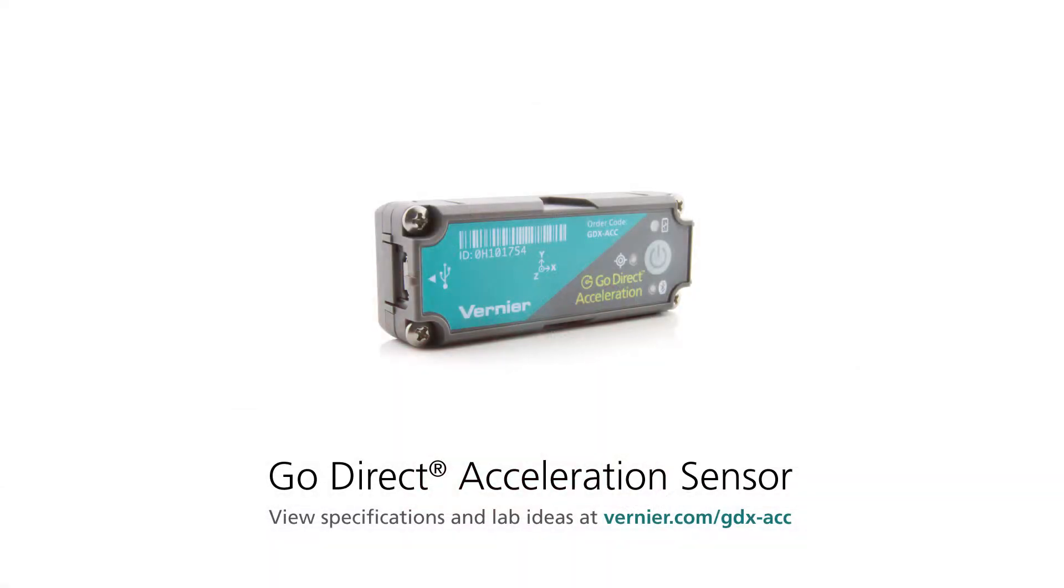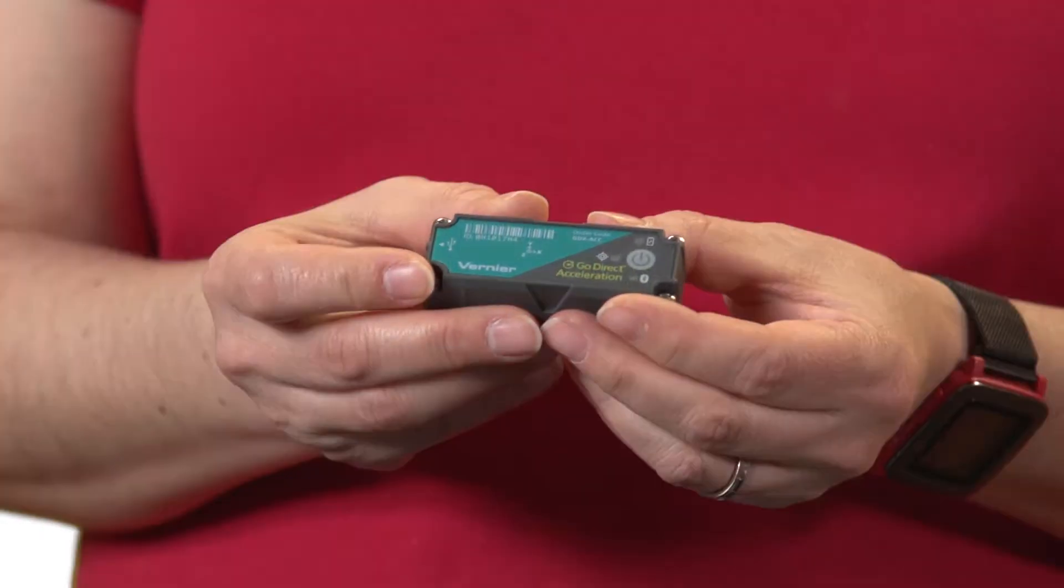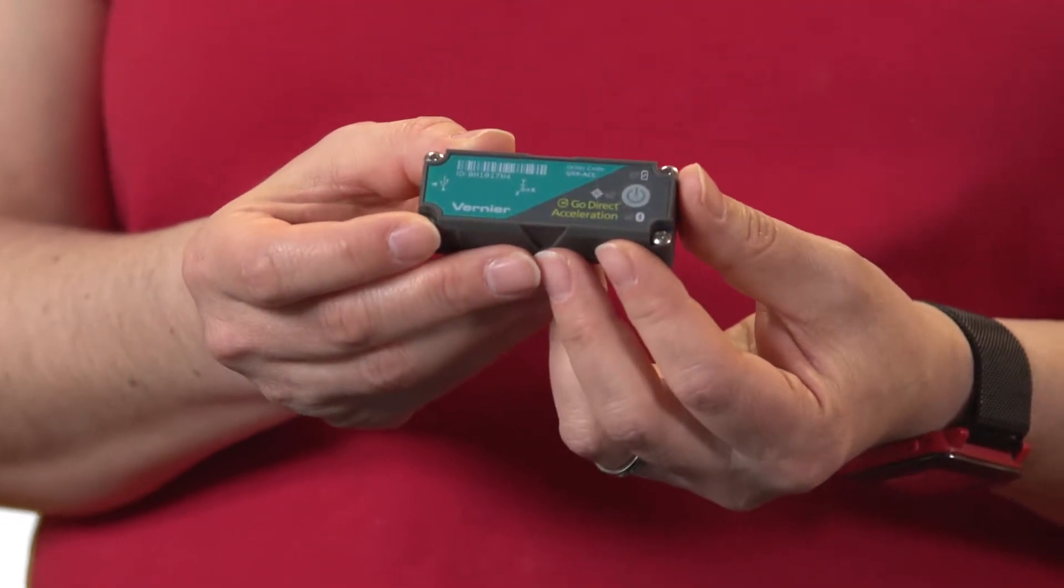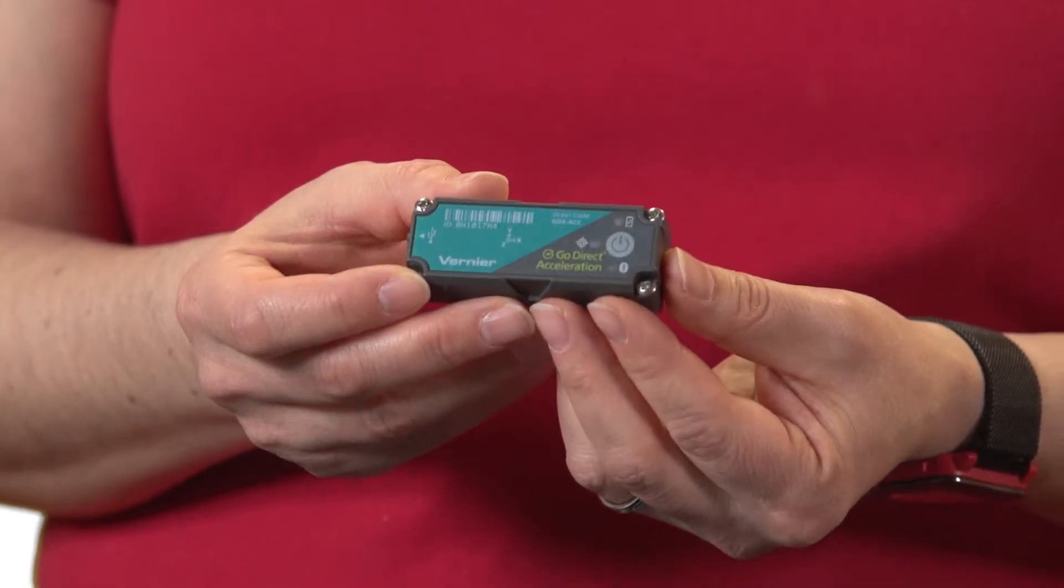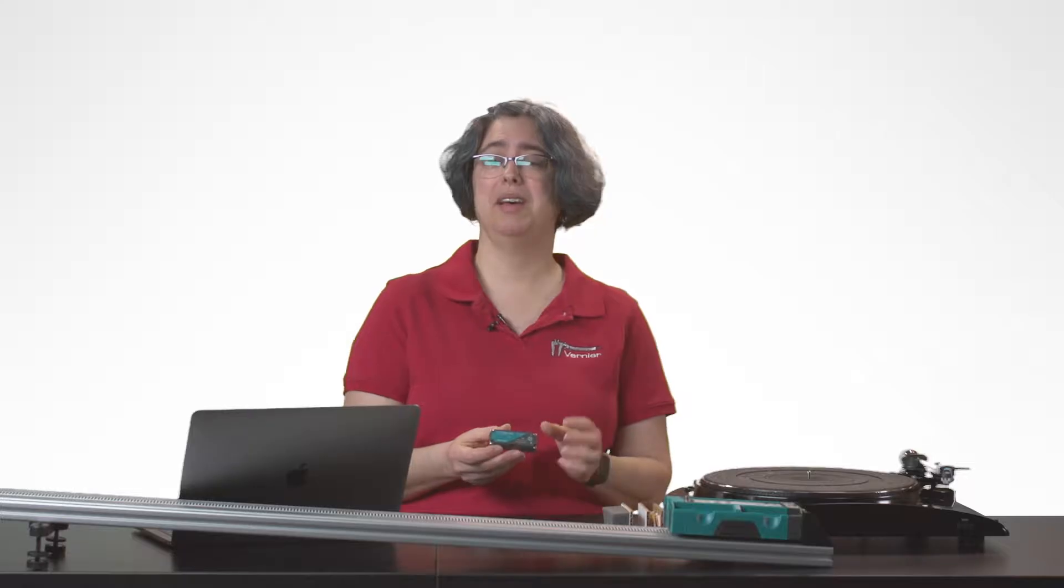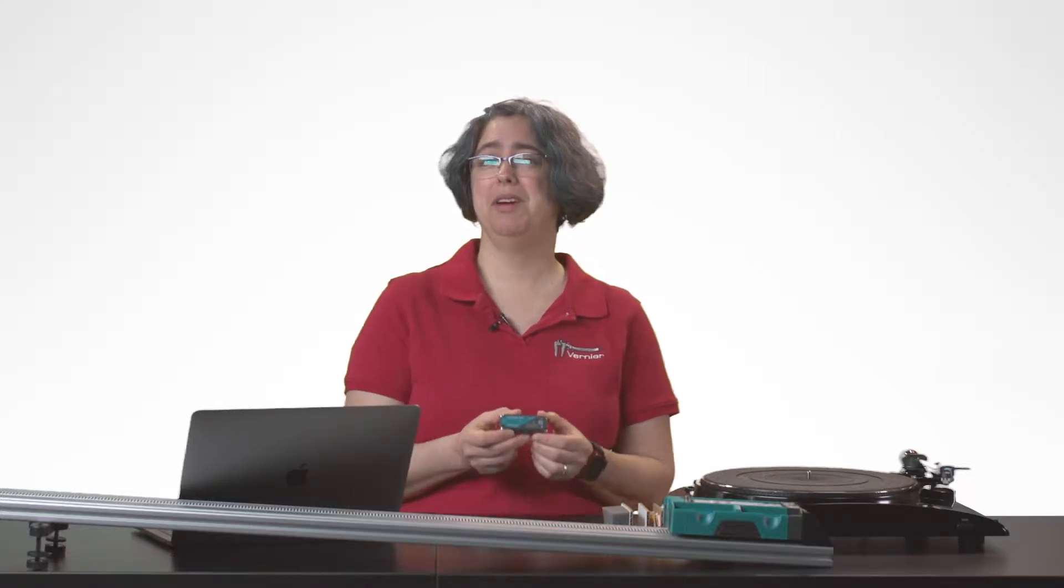This device contains several sensors packed into a nice small package. It includes one three-axis accelerometer at plus or minus 16 Gs, a second three-axis accelerometer at plus or minus 200 Gs, plus a three-axis gyroscope and an altimeter. Very useful device.